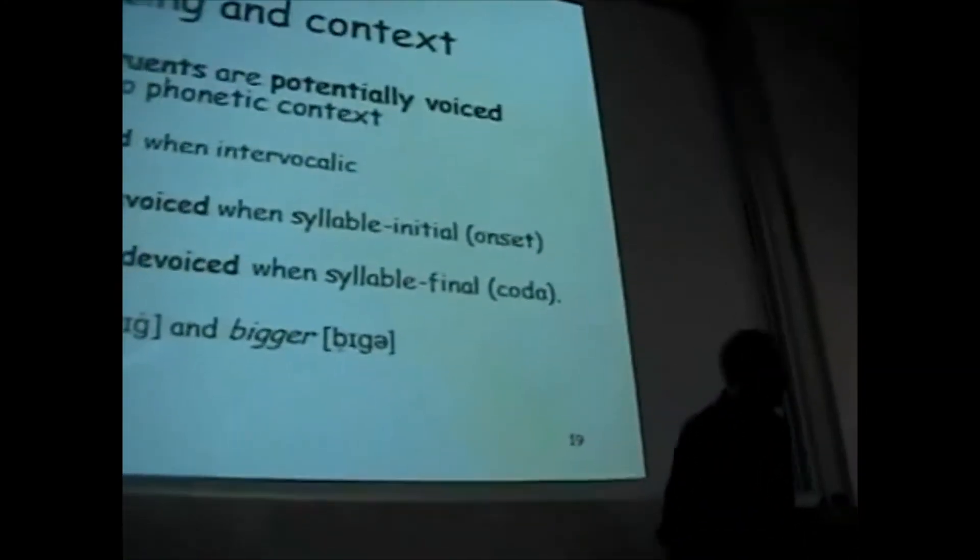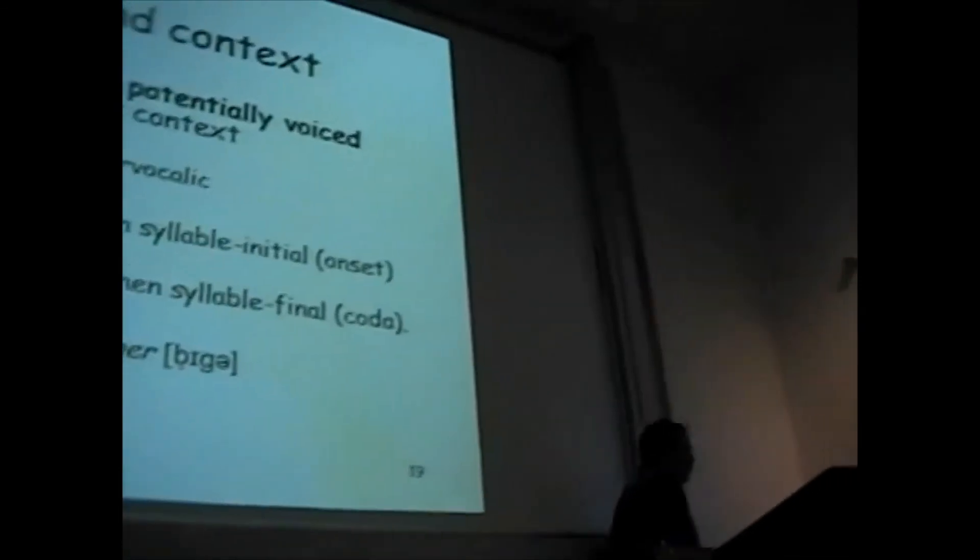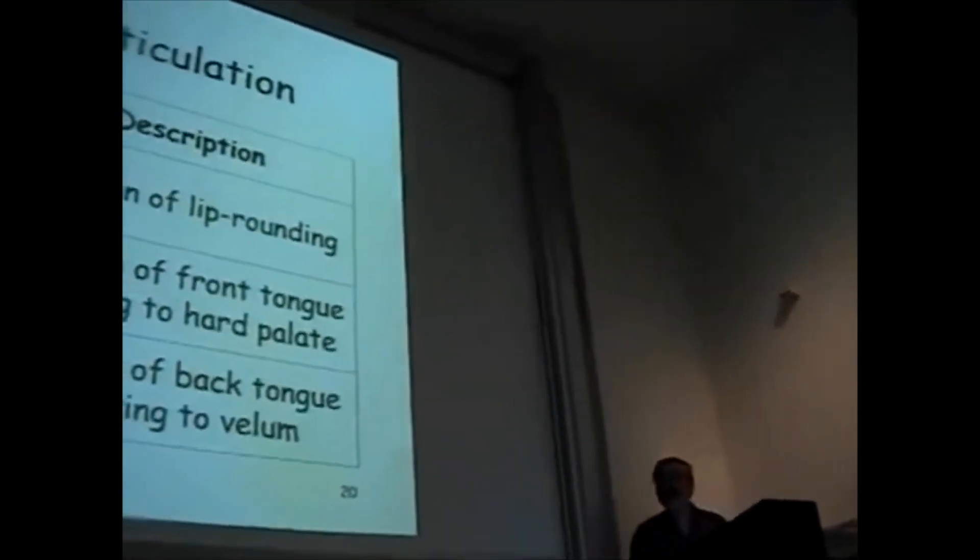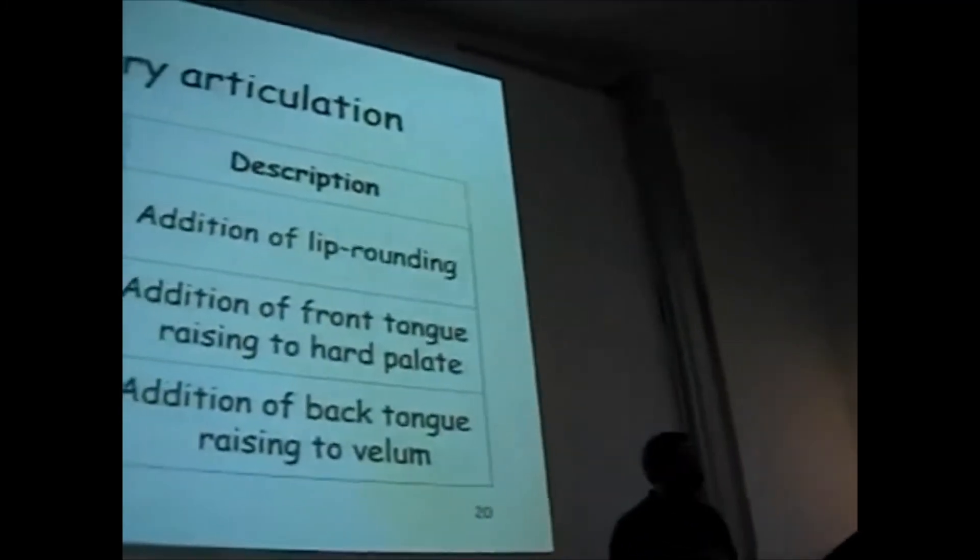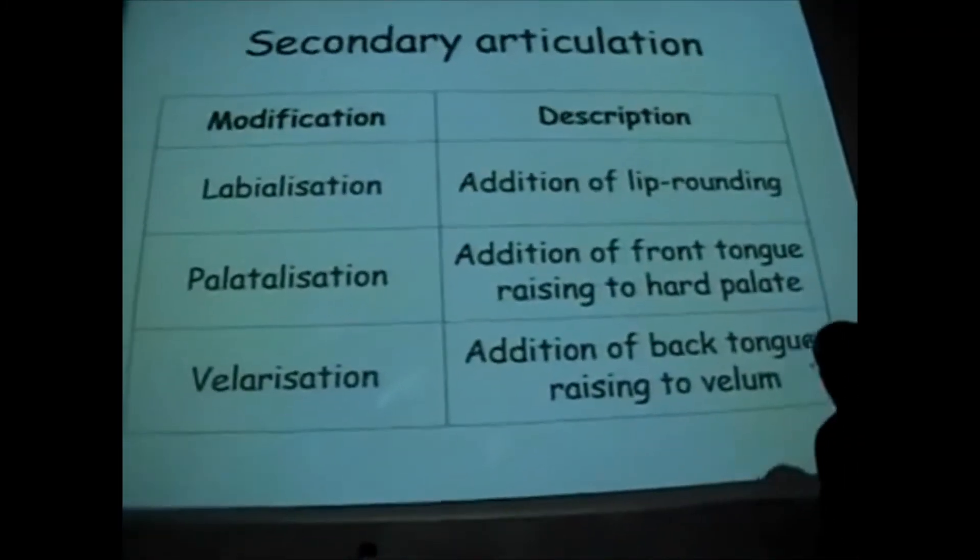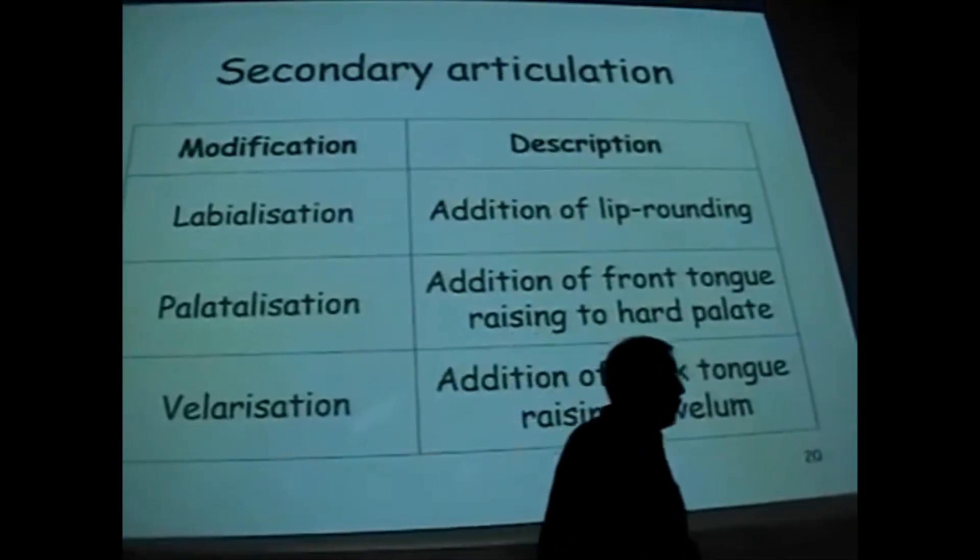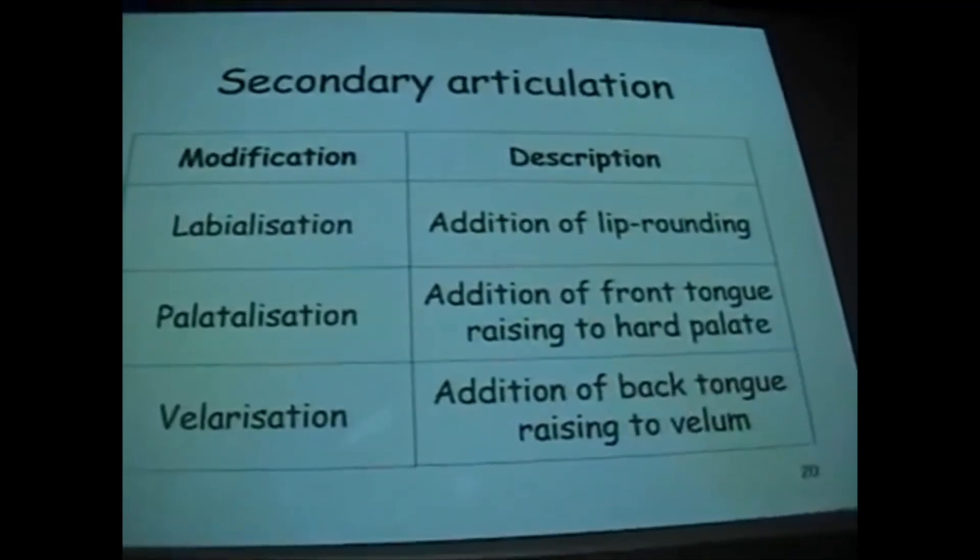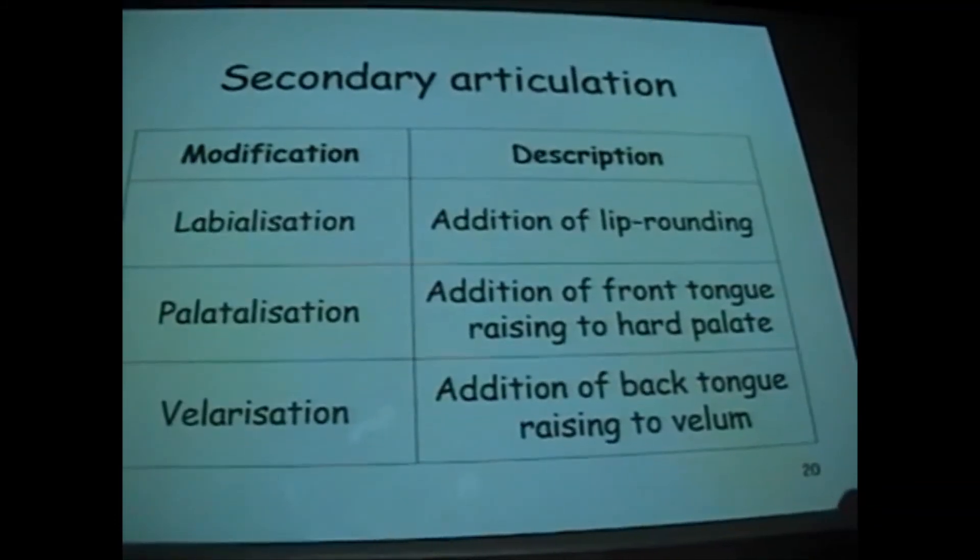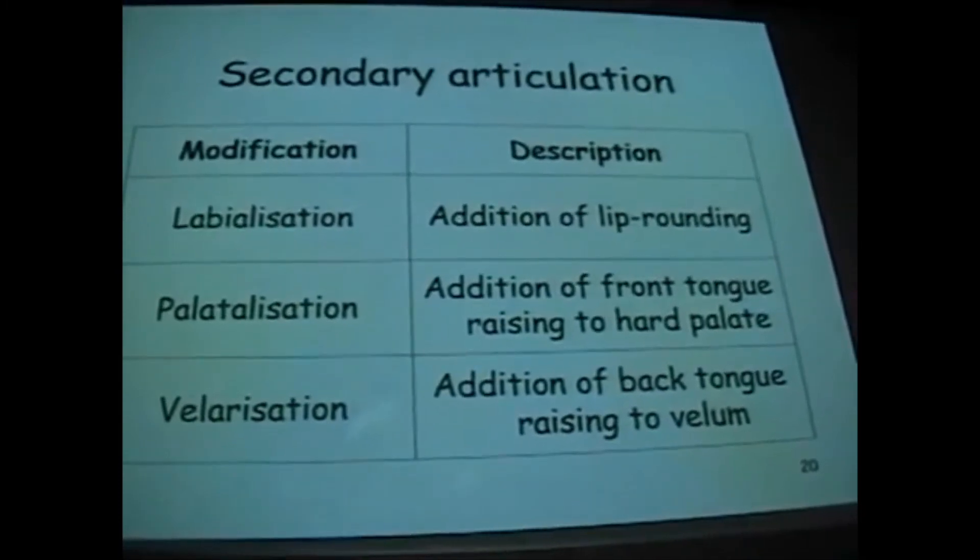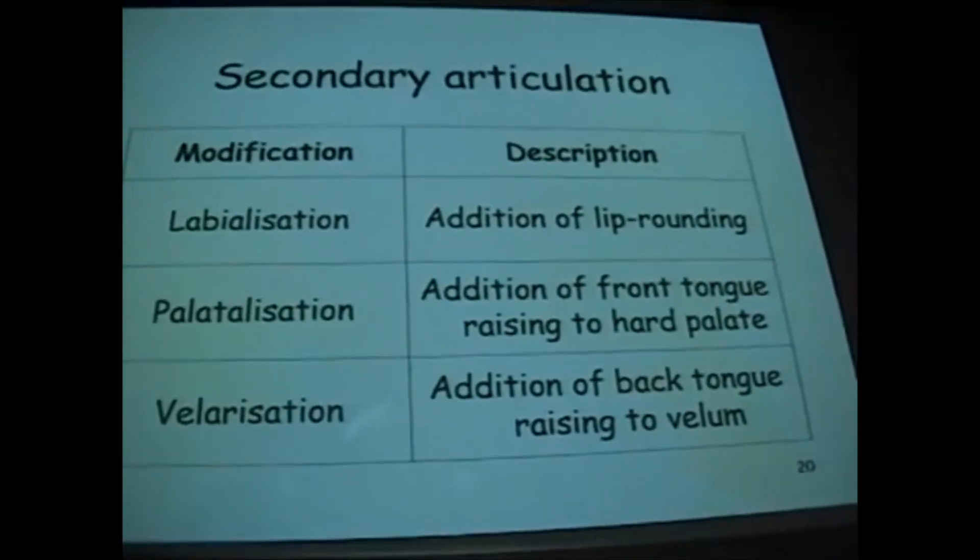Right, we now have one more thing which we have to deal with. And it's an extra, as it were. This is given to you as a bonus. And it's secondary articulation. So these are modifications that can be made of the consonants concerned. You add a secondary articulation to the first. And as you can see here, I've got a little bit more detail with examples on the handout. But you can see here that you have three significant ones.